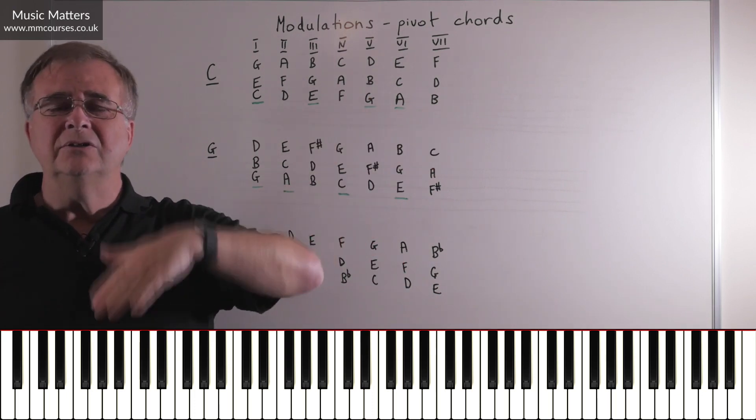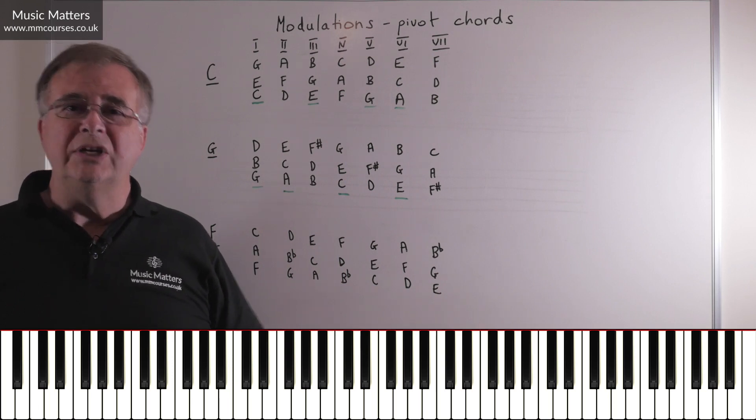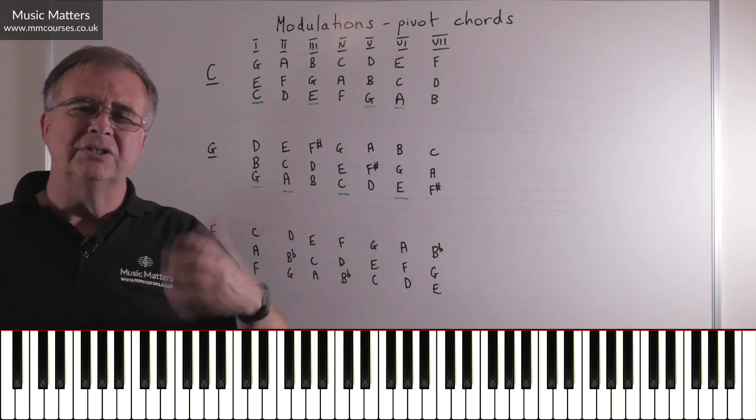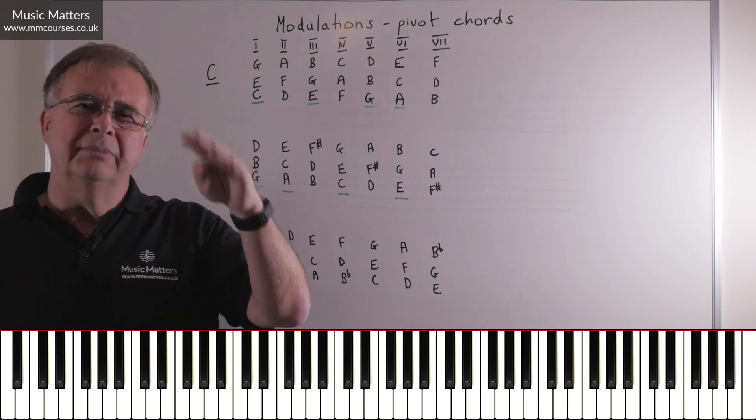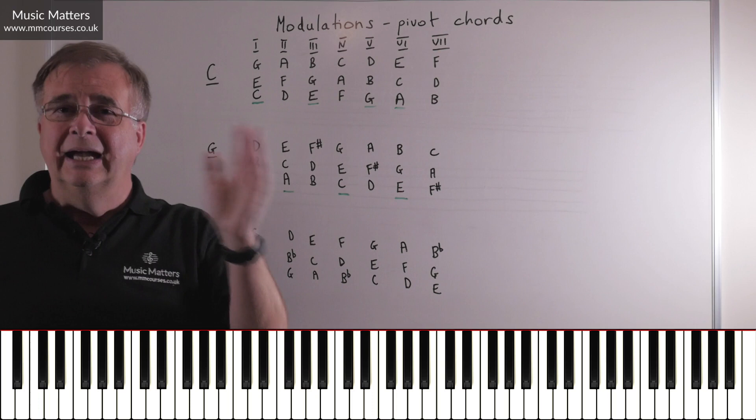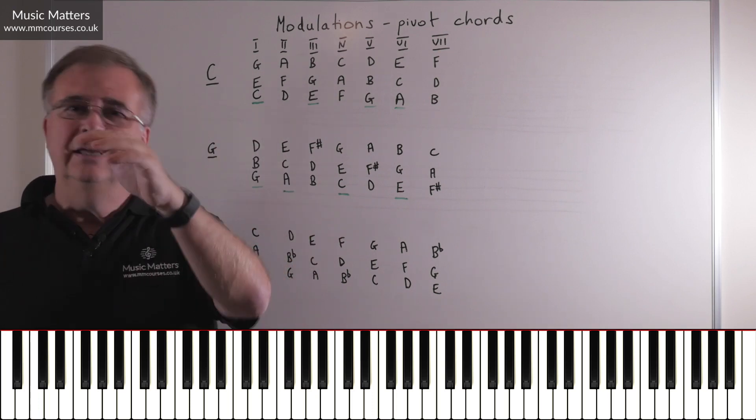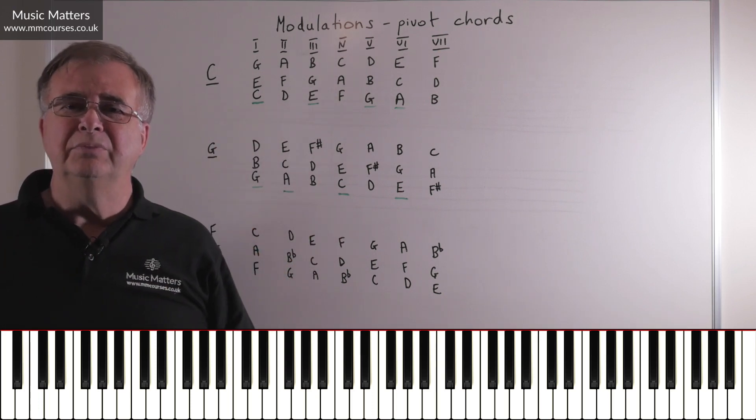So you're not going to find a pivot chord. How do you go from C major to F sharp major? Well you can either just wrench away from one key to the other, which is not subtle, or you might think I've got to make a journey, so I might go to some other keys on the way until I get to a key that's going to give me access to some pivot chords.